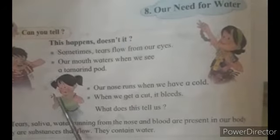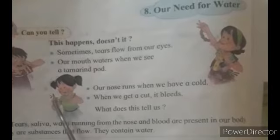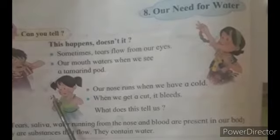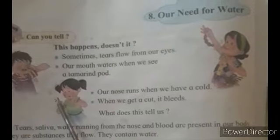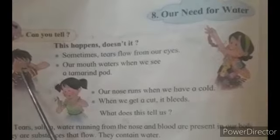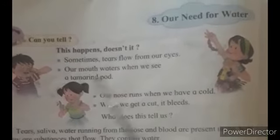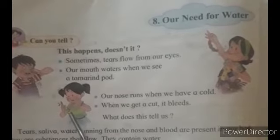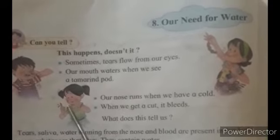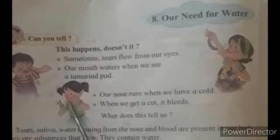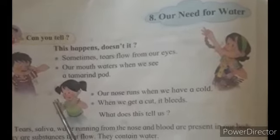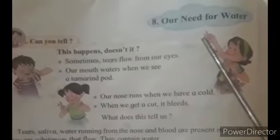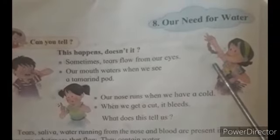In the next picture, this girl has a cut on her finger. What comes out after a cut? Blood comes out. These things — tears, saliva, and blood — are all present in our body and they contain water. Inside the blood, tears, and saliva, there is also water.